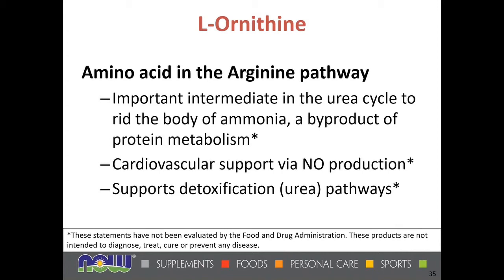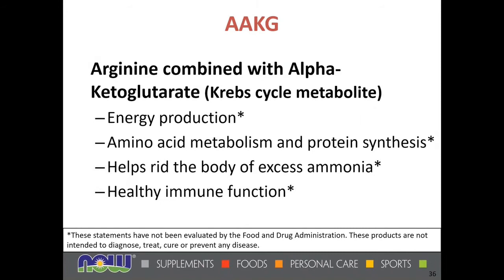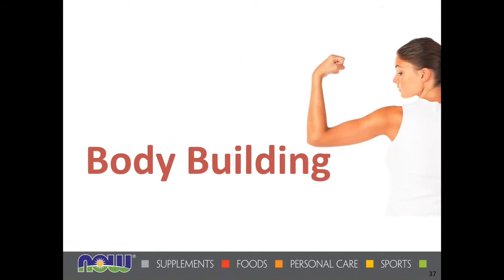L-ornithine is an amino acid in the arginine pathway and an important intermediate in the urea cycle that aids the body's detoxification of ammonia into urea. Ammonia is quite toxic to the body, and urea is how we excrete it through the kidneys and bladder. Ornithine provides cardiovascular support and is involved in nitric oxide production and detoxification via the urea cycle. Arginine combined with alpha-ketoglutarate — known as AAKG — is involved in energy production, amino acid metabolism, protein synthesis, ridding the body of excess ammonia, and supporting a healthy immune system.